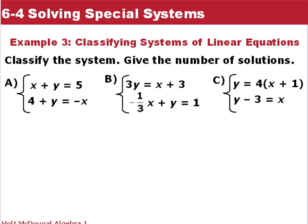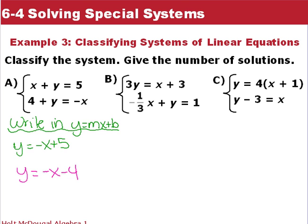Here we want to classify these three systems. The first one, you have x plus y equals 5 and 4 plus y equals negative x. For A, write both of the equations in slope-intercept form, meaning solve them for y. Our first equation, we get y equals negative x plus 5, and our second equation, y equals negative x minus 4. Notice our slopes are both negative 1. Therefore, they have the same slope, different y-intercept. So they're going to be parallel lines and no solution.